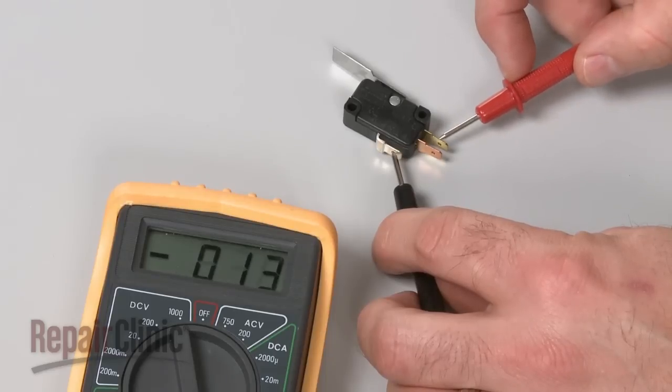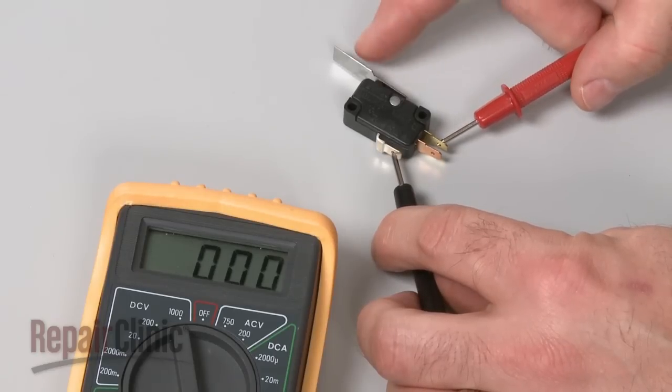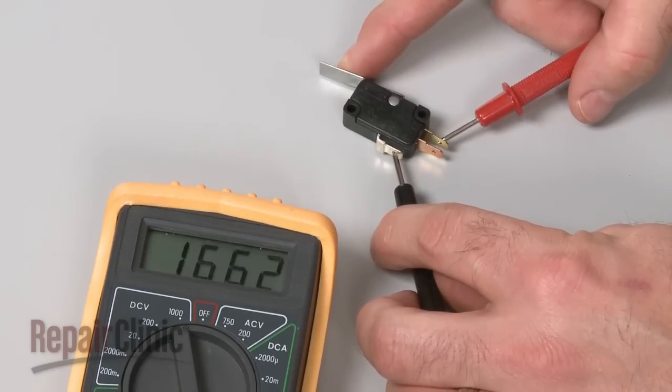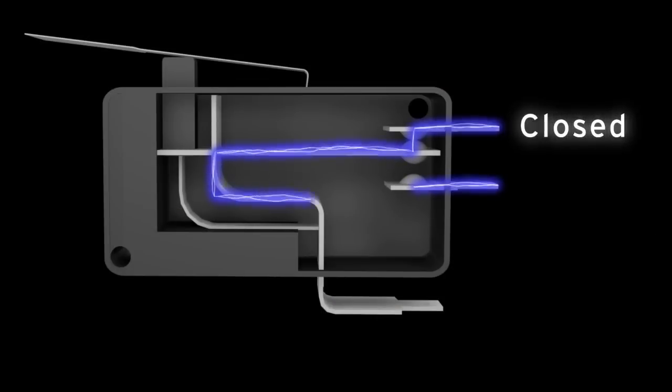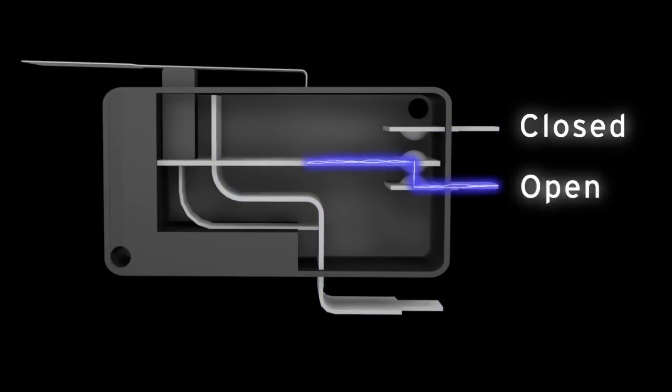Repeat the test for the normally closed terminal to determine if it has continuity. Keep in mind that the normally closed terminal should only provide continuity before the switch has been actuated. Likewise, the normally open terminal should only provide continuity after the switch has been actuated.